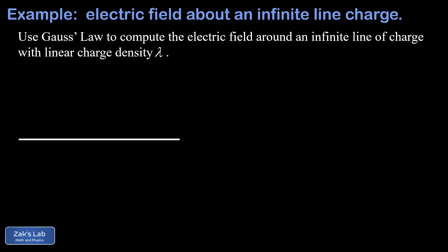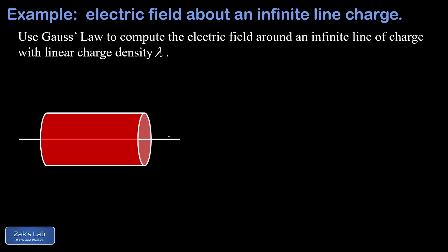Now the first step in setting up a Gauss's law problem is to choose a Gaussian surface that shares the same symmetry as the charge distribution, and in this case that's a cylinder.